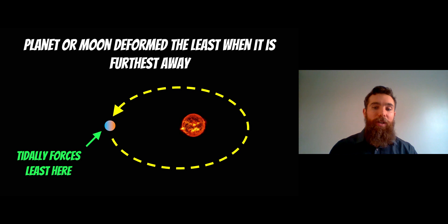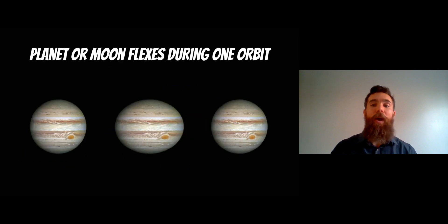When it's furthest away on its elliptical orbit, the tidal forces are less, so the object relaxes back to a less deformed shape. Throughout one orbit, the planet or moon basically flexes. It becomes stretched and then relaxes back, so you get this tidal flexing throughout its elliptical orbit.